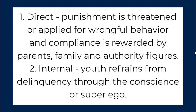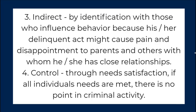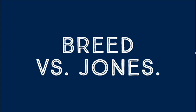2. Internal — youth refrains from delinquency through the conscience or superego. 3. Indirect — by identification with those who influence behavior, because his or her delinquent act might cause pain and disappointment to parents and others with whom he or she has close relationships. 4. Control through needs satisfaction — if all individual needs are met, there is no point in criminal activity.